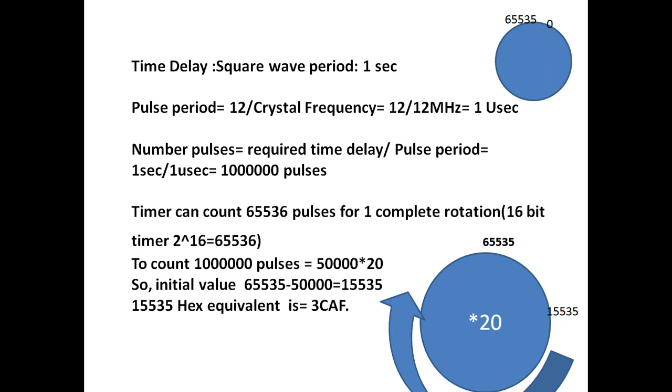But for each count, there is a fixed time delay from your timers. This is based on crystal oscillator frequency, whatever you are connecting from hardware. Mostly 8051 families works with 12 megahertz. Each pulse, which means each count duration is very clear.